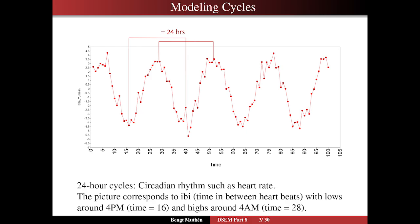IBI stands for inter-beat interval — time in between heartbeats. If you look at it, here it's low at time value 16, which corresponds to 4 p.m. The time between heartbeats is low, meaning heartbeat is very fast — so you're stressed, working all day at 4 p.m. It has a high peak around 4 a.m., time 28: a very long time between heartbeats because you're relaxed, having slept until 4 a.m. So you have a 24-hour cycle between the peaks.